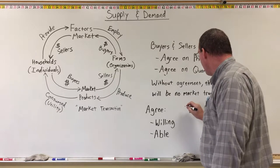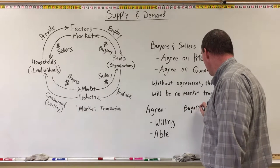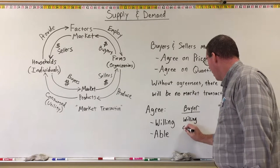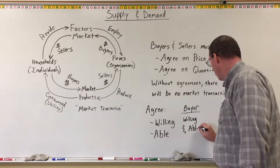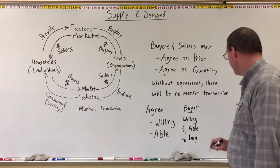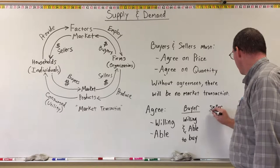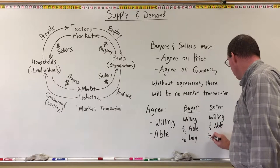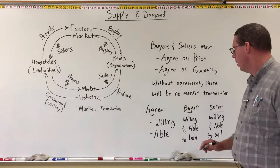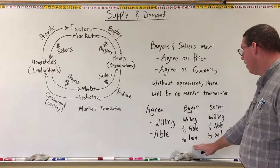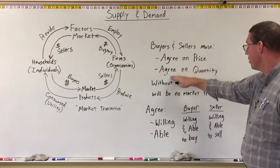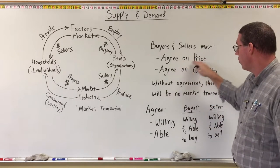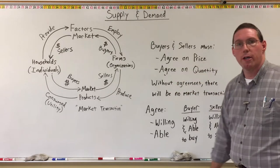The buyer has to be willing and able to buy, and the seller has to be willing and able to sell. If the buyer is willing and able to buy, they can agree on the price and quantity. If the seller is willing and able to sell, they are prepared to agree on the price and quantity, and then we can have a market transaction.